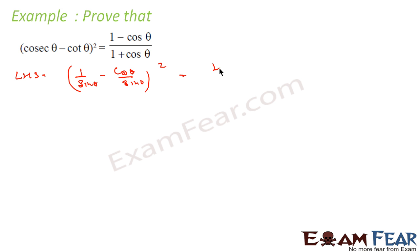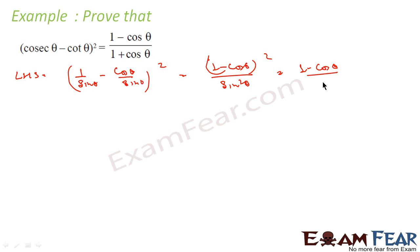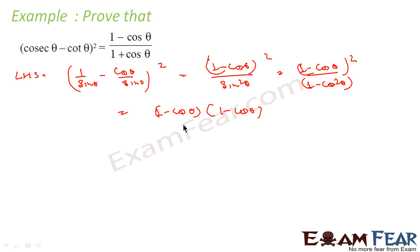Now I have to write everything in terms of cos θ only. So sin² θ can be converted: sin² θ = 1 - cos² θ. So this becomes (1 - cos θ)² over (1 - cos² θ), which factors as (1 - cos θ)(1 - cos θ) over (1 + cos θ)(1 - cos θ).